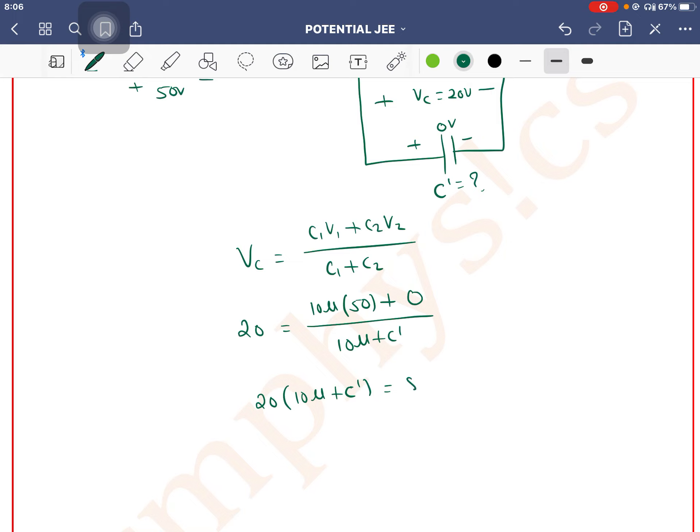This equals 500 microfarad. So these terms are 0. Then 10 microfarad plus C' equals 25 microfarad.